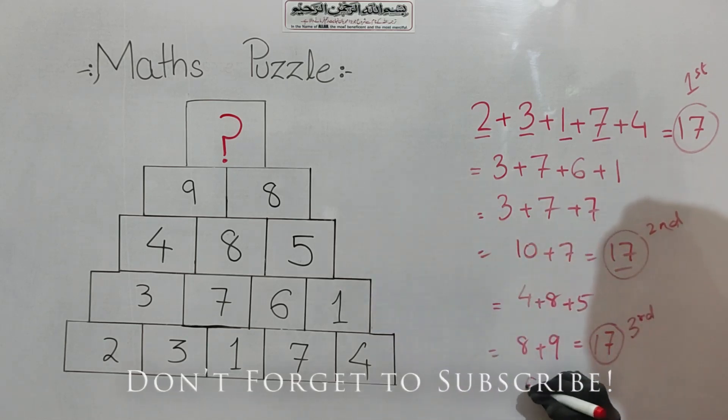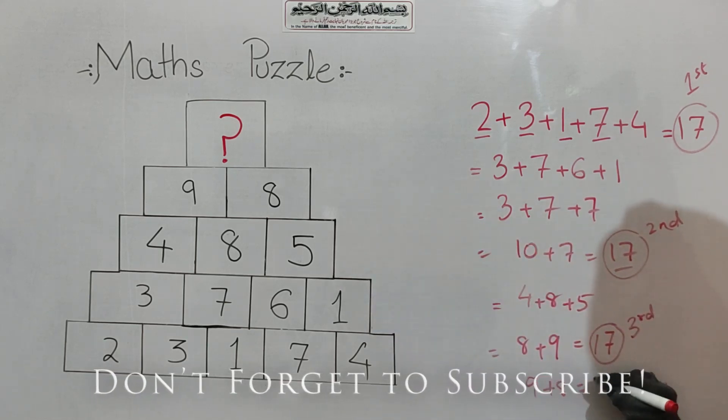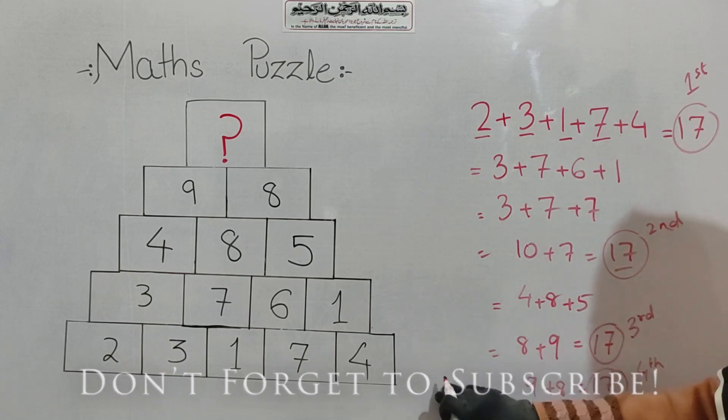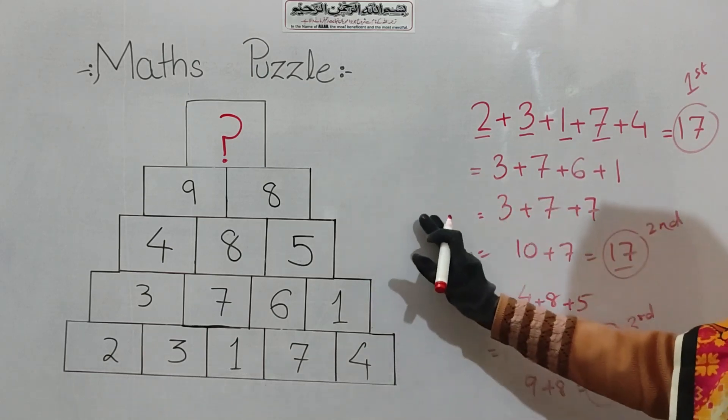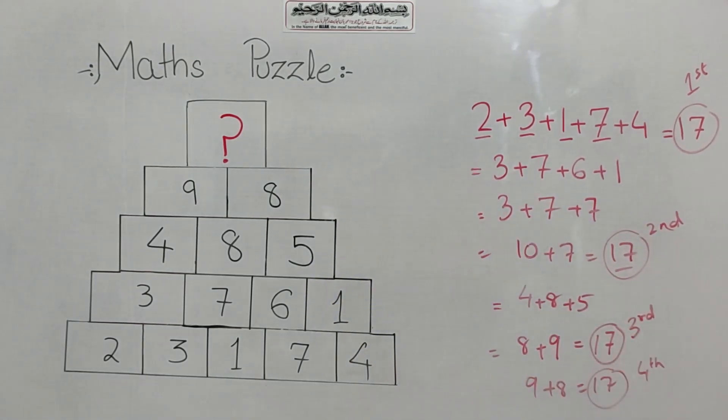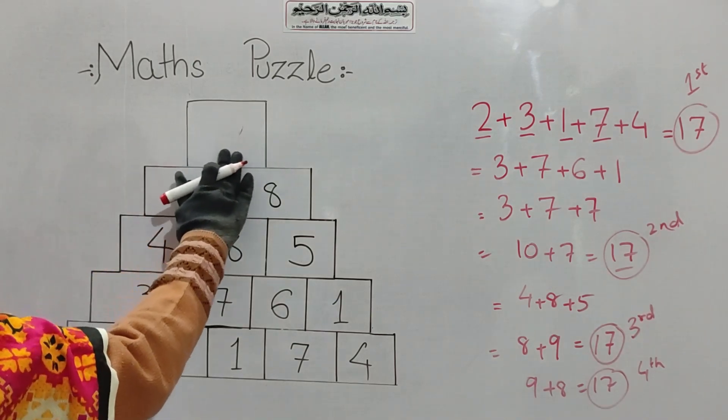In the third row, the answer is 17. Let's check it out: 9 plus 8, the answer is also 17. So where there is a question mark, we will have 17.